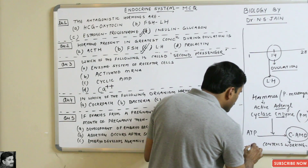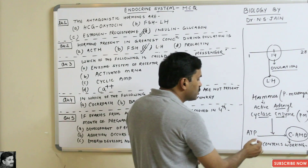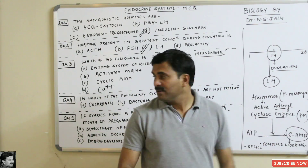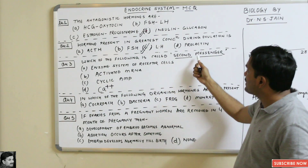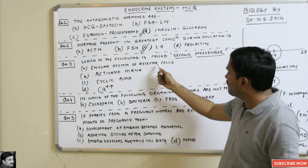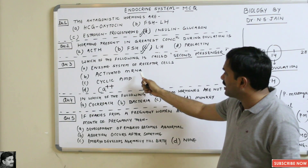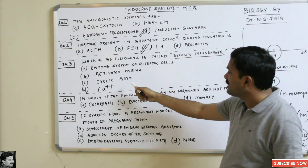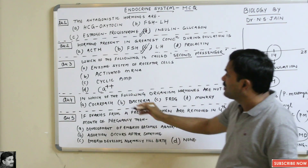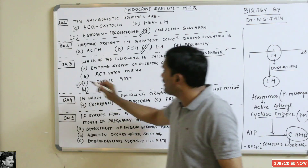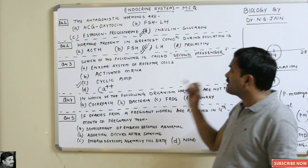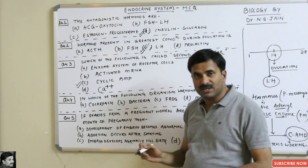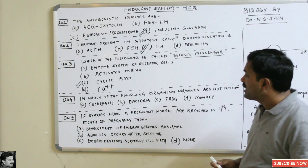Cyclic adenosine monophosphate controls the working of the cell. So the question asks which is the second messenger — the options being enzyme system of receptor cells, activated mRNA, cyclic AMP, or calcium ions. Option C is correct: cyclic AMP is treated as the second messenger.